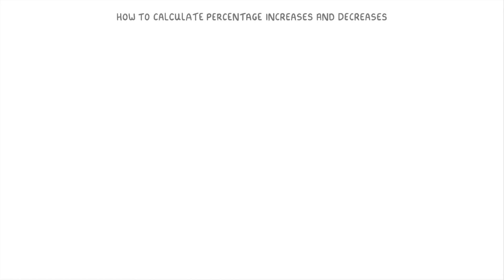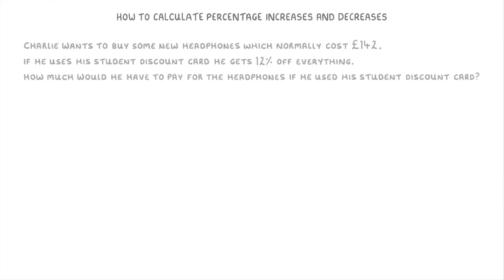Let's have a go at another one with some context this time. Charlie wants to buy some new headphones which normally cost £142. If he uses his student discount card, he gets 12% off everything. How much would he have to pay for the headphones if he used his student discount card? So in this question there are really just three important bits that we need to notice: the fact that the normal cost is £142, the fact that it's a discount so we're reducing the price, and that the size of the discount is 12%.